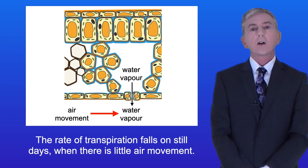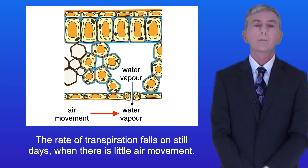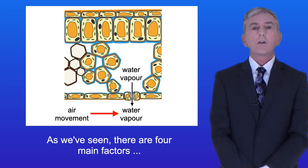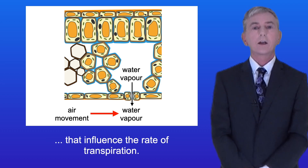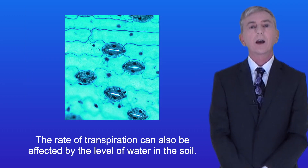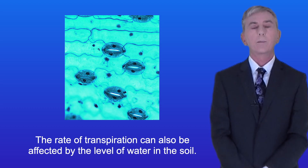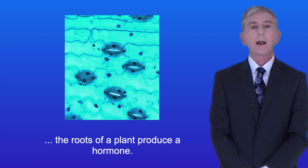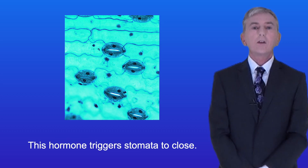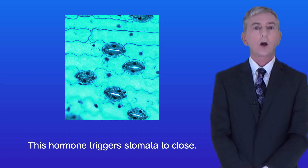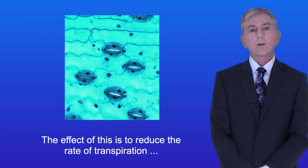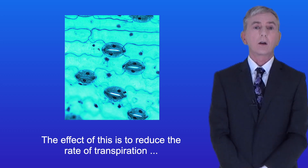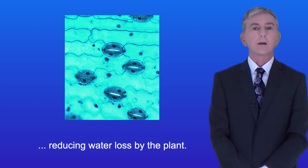The rate of transpiration falls on still days when there's little air movement. The rate of transpiration can also be affected by the level of water in the soil. In drought conditions, the roots of a plant produce a hormone. This hormone triggers stomata to close, reducing the rate of transpiration and reducing water loss by the plant.